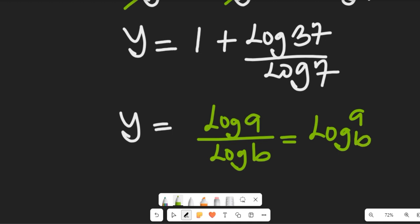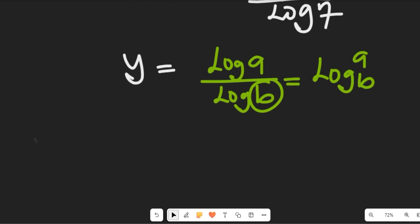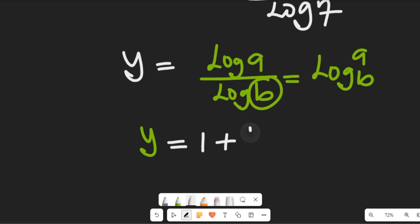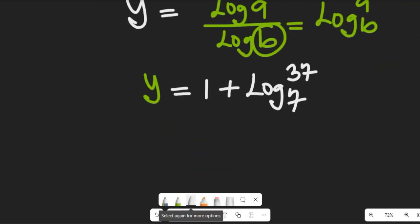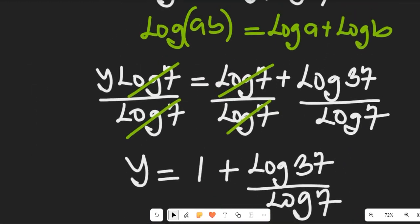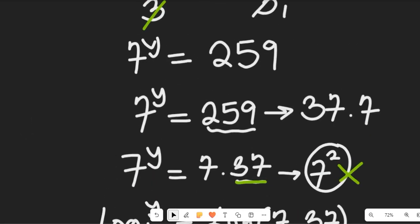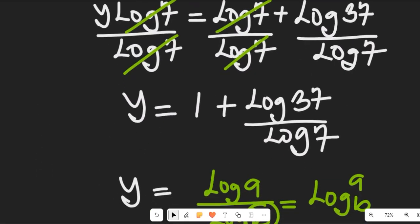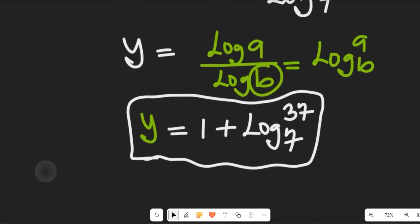So if we apply that to the expression, the value of y will now equal 1 plus log of 37 base 7. This is the solution to the question given to us from the beginning.